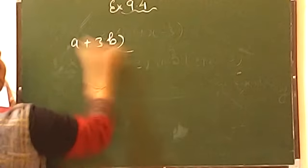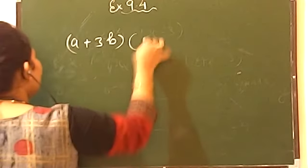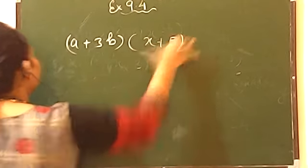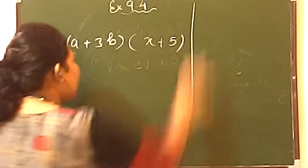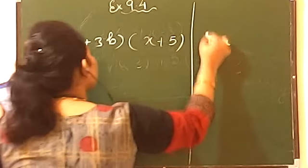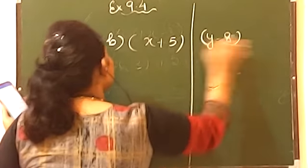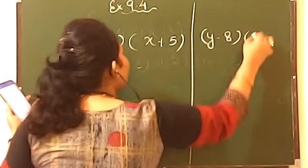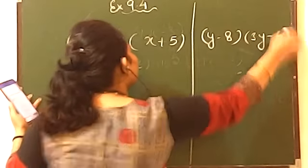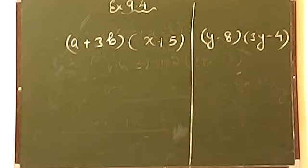I will take only one more question: a plus 3b and another term is x plus 5. And those who have understood, please try this question: y minus 8 and 3y minus 4. Now please solve it.